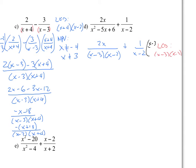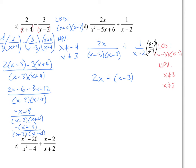Multiply the second fraction by x minus 3 over x minus 3 — again, multiplying by 1. The non-permissible values are x cannot equal 3 and x cannot equal 2. Now the numerator is 2x plus 1 times x minus 3, all over x minus 3 times x minus 2. Do not cancel x minus 3 yet — it is not a factor of your numerator. Combine like terms: 3x minus 3, divided by x minus 3 times x minus 2.